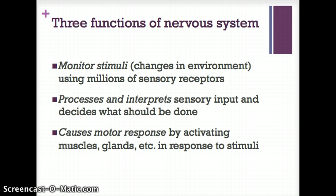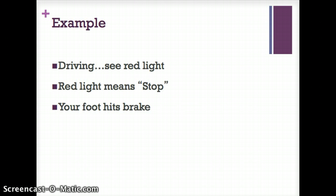Here's an example: when you're driving and you see a red light, you're monitoring stimuli. The red light means stop, so you're processing and interpreting what that means, and then your foot hits the brake — that's the motor output of what you've decided to do based on how you've processed and interpreted that stimuli.